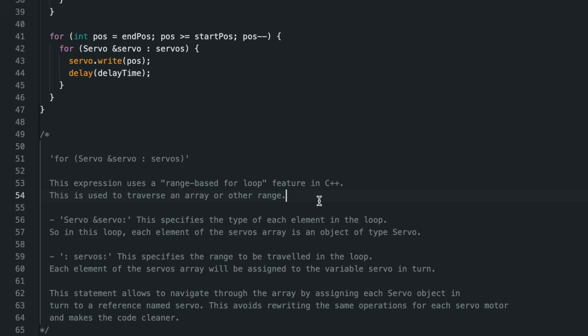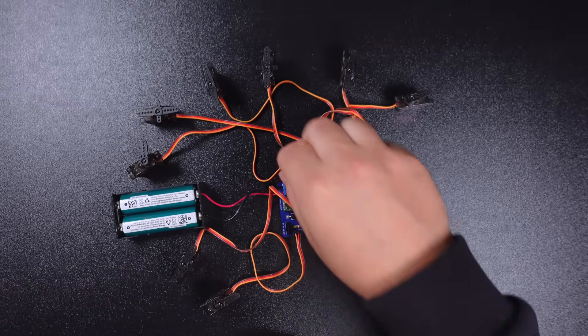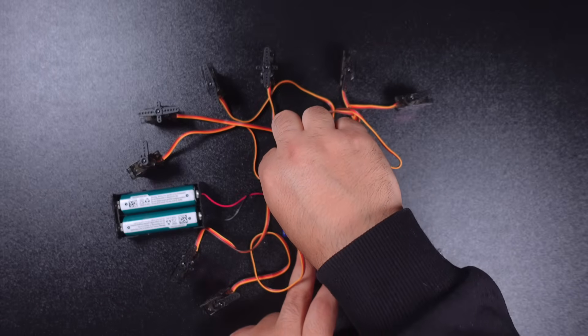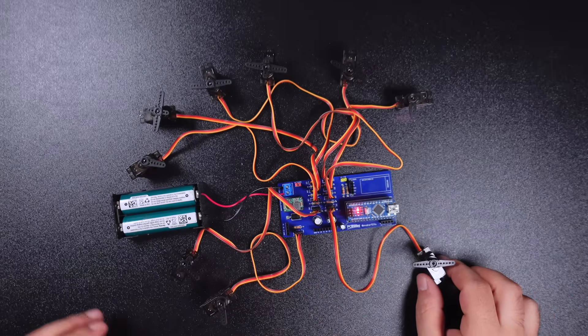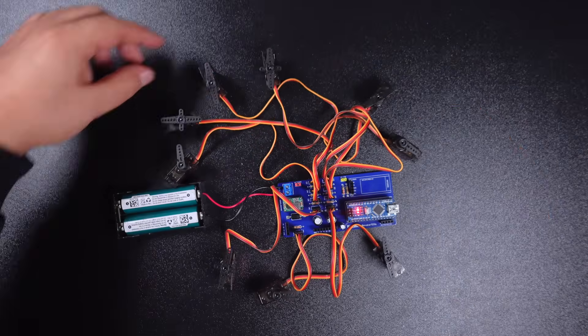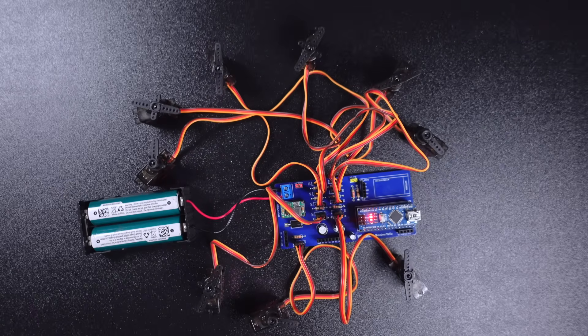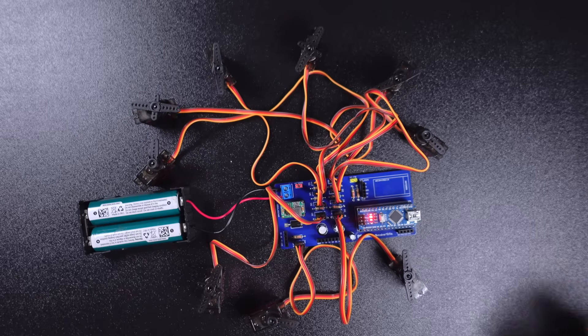After uploading the code and disconnecting the USB connection, we connect the power supply to the circuit. As you can see, the servo motors are not powered without the servo power jumper in place. An on-off switch is also preferable instead of a jumper. As observed, the circuit works well and provides a smooth movement even though the servo motors are all running at the same time.